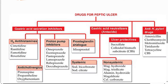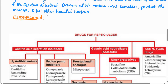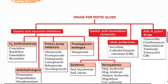The classification heading is: drugs used for peptic ulcers. We have four main types: gastric acid secretion inhibitors, gastric acid neutralizers, anti-H. pylori drugs, and ulcer protectors.